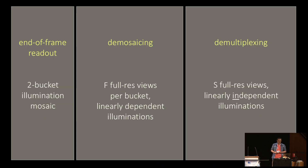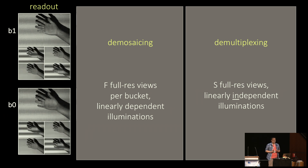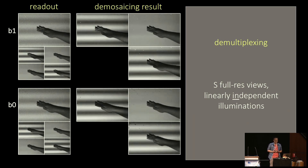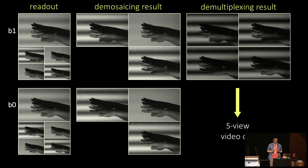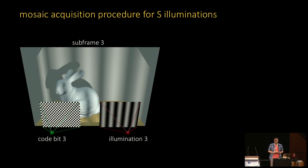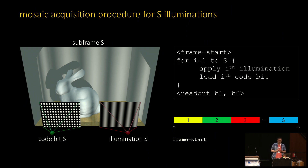We do this in three steps. We first configure our sensor to output what we call a two-bucket illumination mosaic — a pair of images, one per bucket, that pack reduced-resolution views corresponding to different illuminations, though not exactly the ones we want. This mosaic is output at standard video rate. We then upsample these views to full resolution with a demosaicing algorithm and reconstruct the views we actually want by demultiplexing. To acquire such a mosaic, we change both the scene's illumination and the active bucket of each pixel many times during each frame, splitting the frame into s subframes.